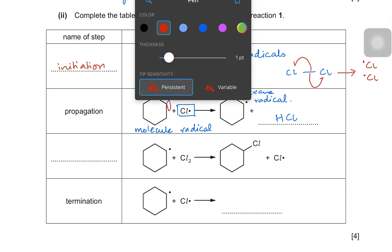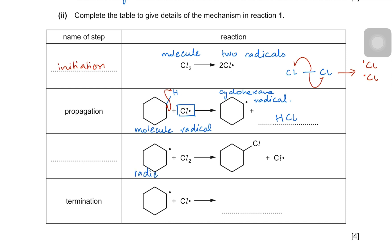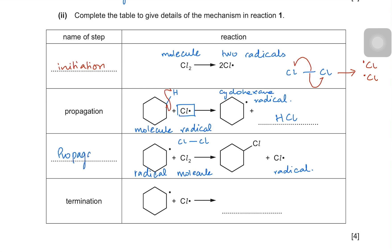In the next propagation row, the cyclohexane radical attacks a chlorine molecule. The cyclohexane radical wants stability, so it bonds with one of the chlorine atoms, forming chlorocyclohexane's carbon–chlorine bond, while the other chlorine atom becomes a new chlorine radical. A propagation step is one where a radical attacks a molecule to produce another radical.